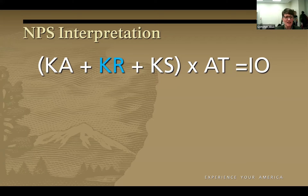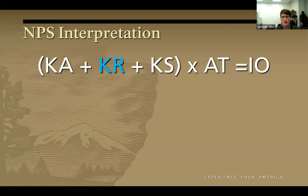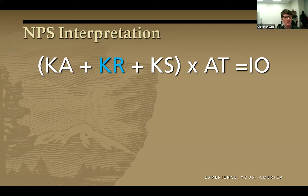KR is knowledge of the resource. At Independence National Historical Park, our resource is history. There are lots of ways to gain knowledge of the resource. I talked about the collaborative nature of interpretation — we learn so much from each other about the stories of Independence, the revolution, the founding fathers and founding generations. There are other ways to get that knowledge: we have a whole cultural resources division you can reach out to. We also have something called a long-range interpretive plan, which is part of this presentation, so we'll come back to that.